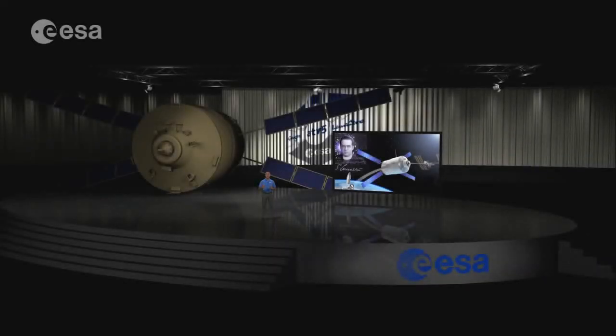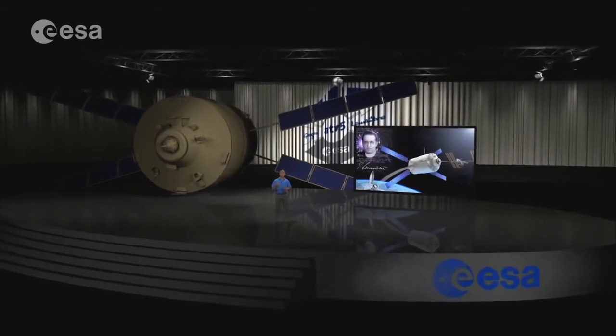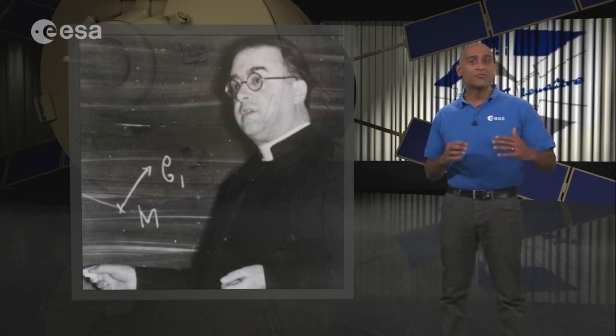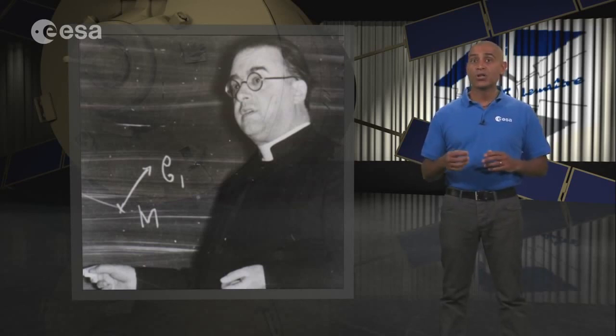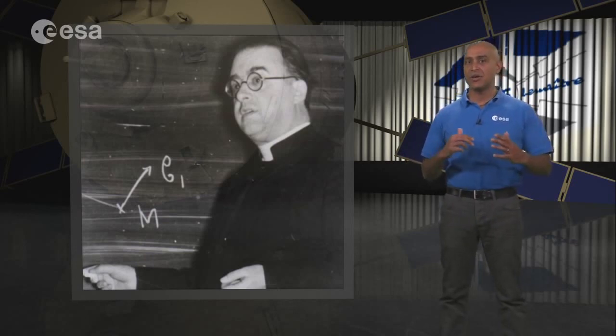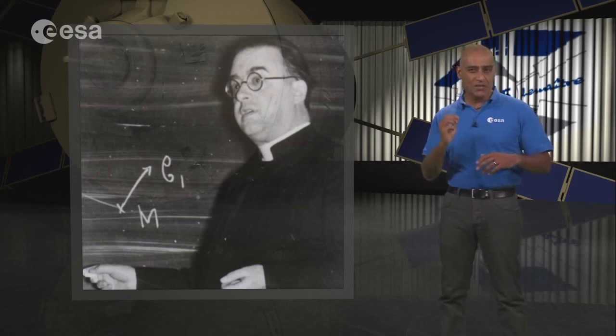Of all the theories proposed by astronomers to try and explain the observed features of our universe, none has captured the imagination more than the Big Bang. This model has transformed our understanding of the cosmos and the origins of space and time. And the father of the Big Bang was the Belgian astronomer Georges Lemaitre. Born in 1894 in Charleroi, Belgium, Lemaitre served as an artillery officer in the Belgian army during World War I, and subsequently trained as both a priest and a physicist.